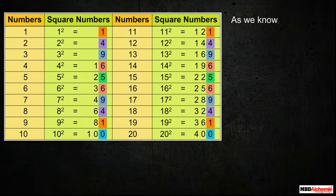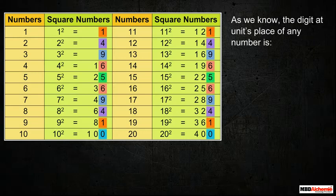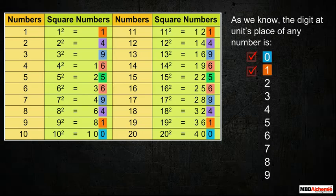As we know, the digit at unit's place of any number is 0 to 9. So, we say that a square number always ends with either 0, or 1, or 4, or 5, or 6, or 9 at its unit's place.